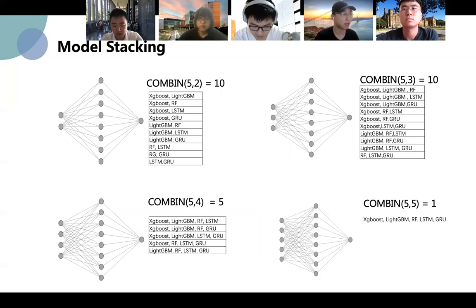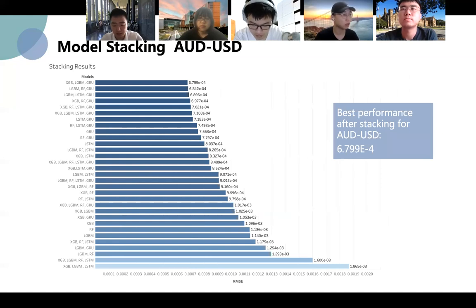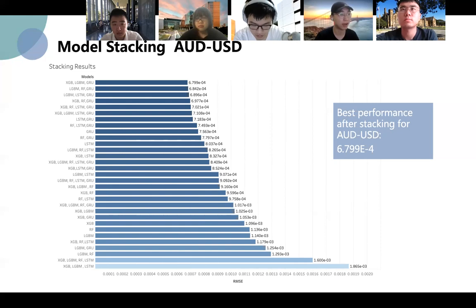By comparing the RMSE of these 31 possibilities, we can choose the model with the smallest RMSE as the final stacking system. As shown in the graph for AUDUSD, the stacking system which uses XGBoost, LSTM, LightGBM, and GRU has the smallest RMSE. So we use these three models as the final input features of the stacking system. It shows that the stacking system improves the model's performance from the single best one, GRU, at 7.5 multiplied by 10 to the power of minus 4, to the stacking result of 6.7 multiplied by 10 to the power of minus 4. So the stacking system works.